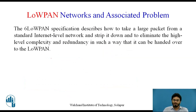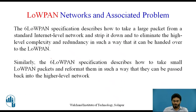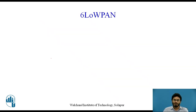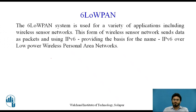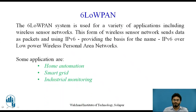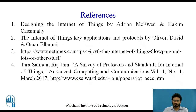6LoWPAN specifies a technology that takes a standard internet-level network packet and strips it down by eliminating higher-level complexity so that it can be handled by low-PAN networks. It also does the vice versa — it can take the 128-byte packets offered by the low-PAN network and convert them back into standard network packet sizes. In summary, 6LoWPAN is used for a wide variety of applications including home automation, smart grid, and industrial monitoring, all of which involve low-power requirements.